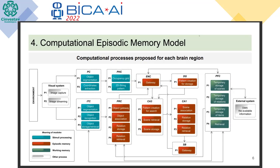Then we have the brain cortex, which is the first structure that helps with episodic memory. It helps us create relationships between objects. For example, if we have two objects within a scene, that means they have some kind of relationship. We store this relationship so that in the future, if we identify one of those objects, we can recall or retrieve the other one, because we know that at some point they appeared together.